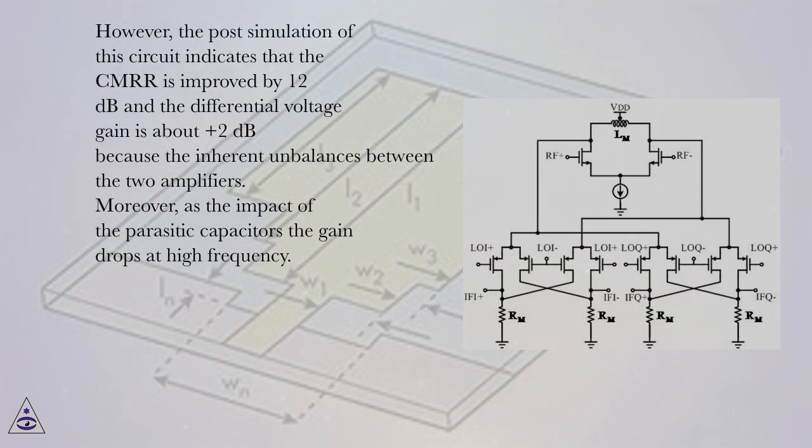However, the post-simulation of this circuit indicates that the CMRR is improved by 12 dB and the differential voltage gain is about +2 dB because of the inherent unbalance between the two amplifiers. Moreover, as the impact of the parasitic capacitors the gain drops at high frequency.